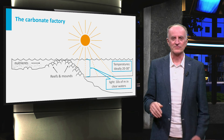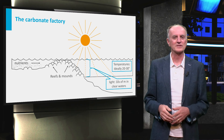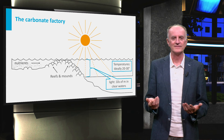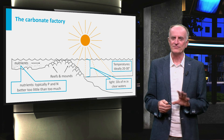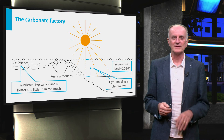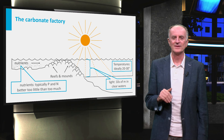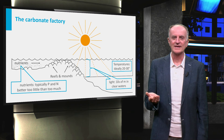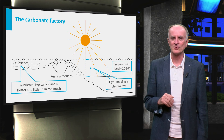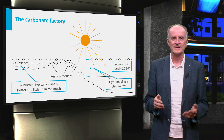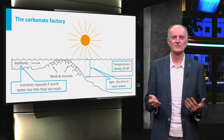Temperatures are also of great importance, and most organisms have a strong preference for waters between 20 and 30 degrees. Nutrients are obviously also of great relevance. Different from what you might think, however, the greatest danger is too much rather than too little nutrients. When nutrients are too abundant, carbonate producers are outpaced by other biological competitors and suffer. This is what happens in seas where rivers bring large amounts of fertilizers.